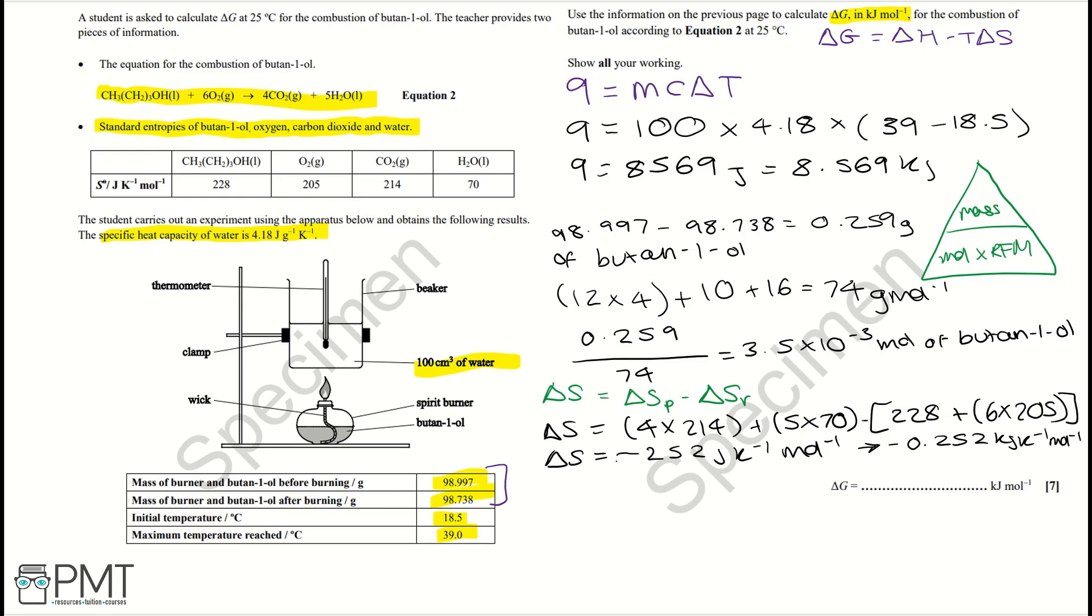And we can work out delta H using our Q value of energy and our moles. So delta H is equal to 8.569 divided by 3.5 times 10 to the negative 3. And that equals minus 2448 kilojoules per mole.